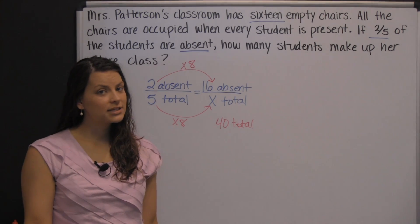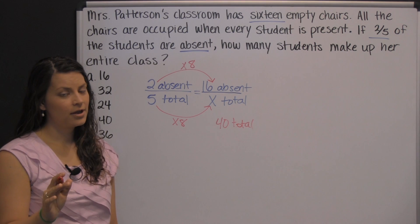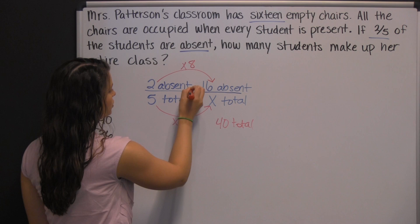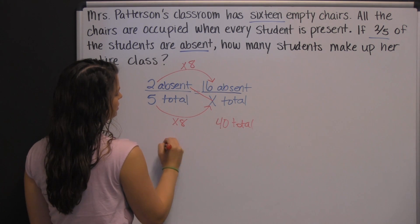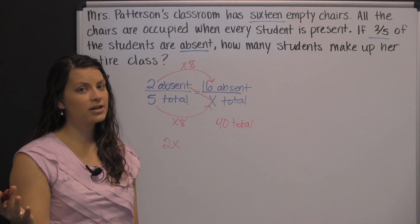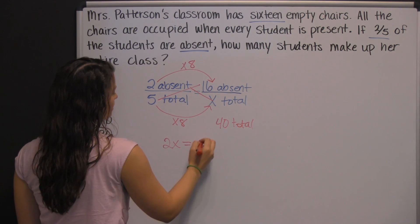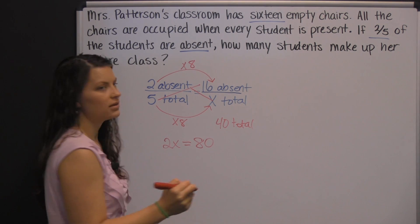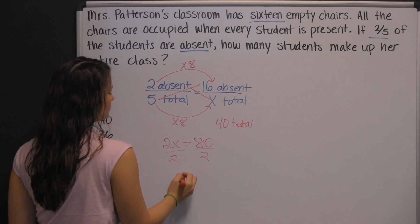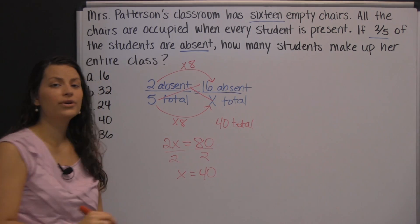But not all proportions can be solved that way. All proportions can, however, be solved with cross products. You just cross multiply: two times x is 2x, and the cross products of every proportion are equal. So that equals five times sixteen, which is eighty. Then you simply solve for x — divide both sides by two — and you still get that x is forty, or that there are forty total students in the class.